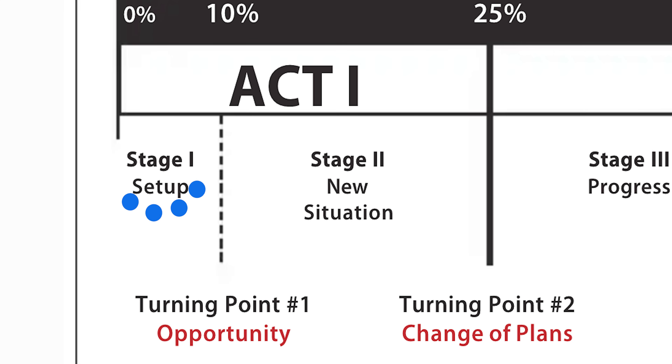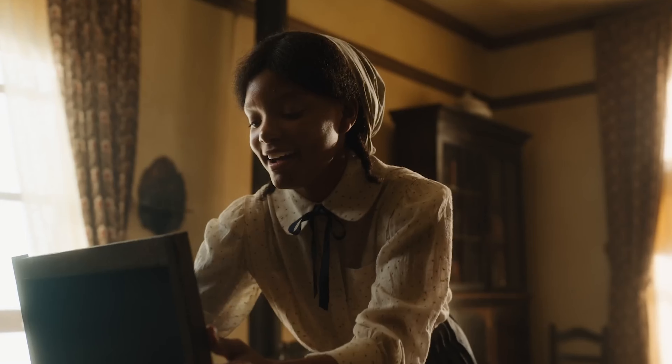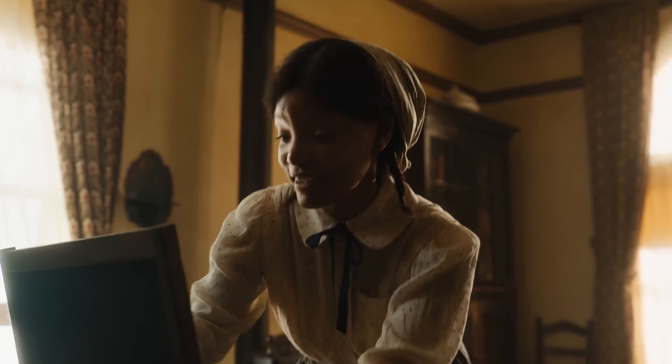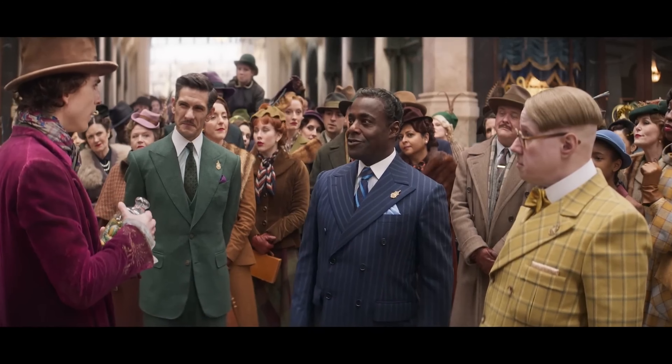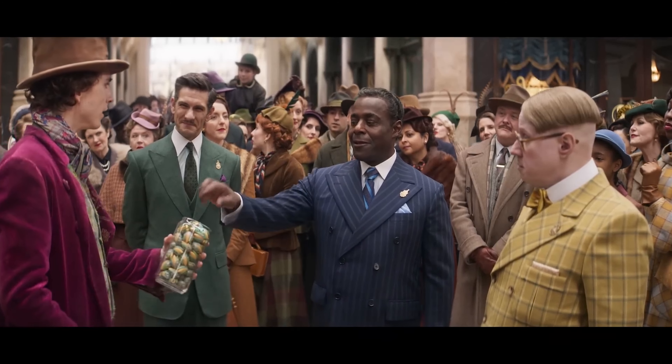Stage one: the setup. The first 10% of your screenplay constitutes what Michael Haig calls the setup. This is simply where we introduce our hero and begin to feel an emotional connection to our character. This is the point where we set up that outer journey, which Michael Haig refers to as the journey of accomplishment — the visible goal that the character is going to accomplish by the end of the film.